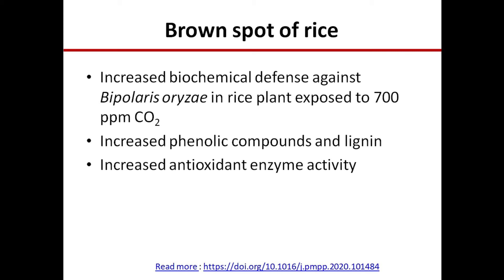Next is a study on brown spot of rice in connection with climate change. When there is a high carbon dioxide concentration of up to 700 ppm in the atmosphere, researchers observed that Bipolaris oryzae, which causes brown spot disease of rice, can be managed. At this high CO2 concentration, plants have more phenolic compounds and lignin, and show increased antioxidant enzyme activity, activating the biochemical defense of the plant — thereby managing brown spot of rice.